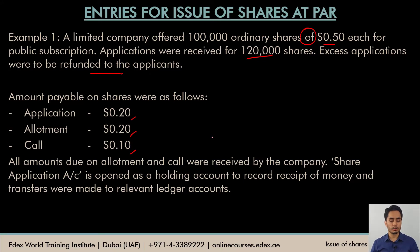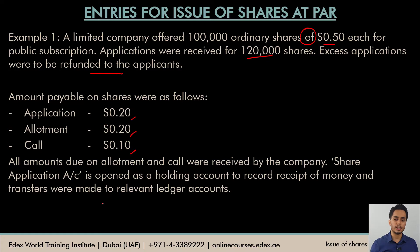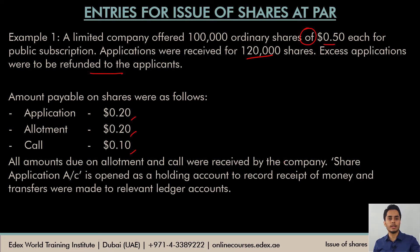All amounts due on allotment and call were received by the company. The share application account — the temporary account — will have to be opened and the necessary ledger accounts prepared. Before the ledger accounts, let's understand the journal entries. Note down the important details: company offered 100,000 shares, received applications for 120,000 shares, and the value of the different installments.